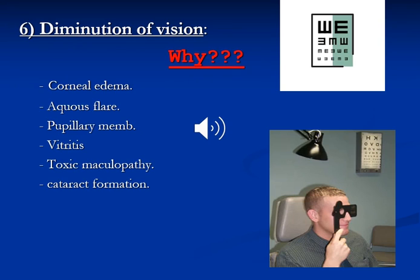Decreased visual acuity is another symptom. Why is there a decrease of vision due to uveitis? It could be due to corneal complications like corneal edema, or keratic precipitates, pupillary membrane, vitreitis, toxic maculopathy, or cataract formation.